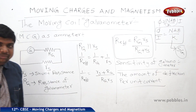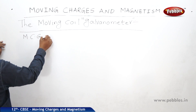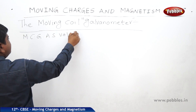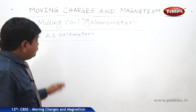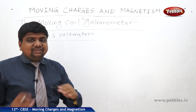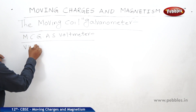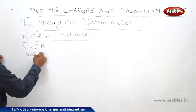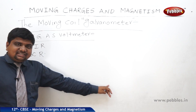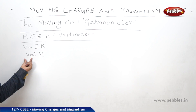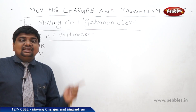Next, we will see MCG as a voltmeter — Moving Coil Galvanometer as a voltmeter. A voltmeter is a device used to measure the voltage or potential difference across a conductor or between two given points. From Ohm's law, V = IR, so V is proportional to R. To find voltage, the resistance must be connected in series. Therefore, for the galvanometer, we connect a shunt resistance in series.